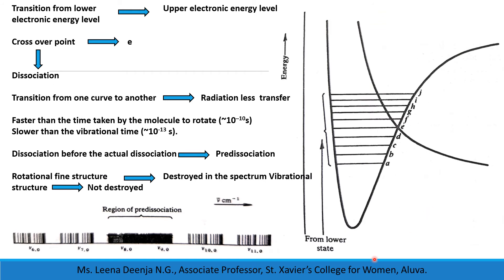If the transition from the lower electronic level to the upper electronic energy level is at D, E, or F, since there is a crossover point at E, there is a possibility that the molecule will cross over to this electronic energy level and dissociate. In general, transition from one curve to another in this way is called radiationless transfer, since no energy is absorbed or emitted in this process.